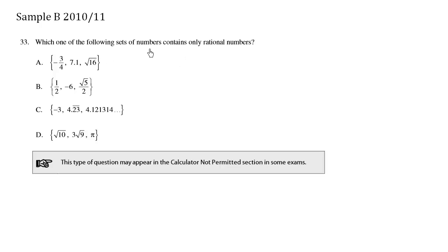Which of the following sets of numbers contains only rational numbers? Now, when we're talking about rational numbers, it's a number that can be represented as A over B, where A and B are integers.